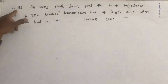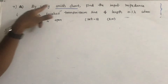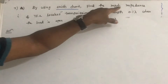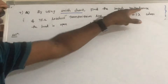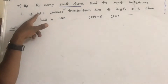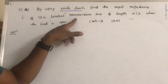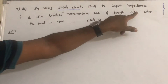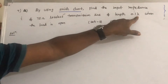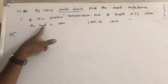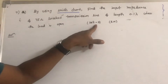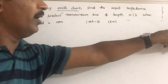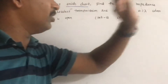Question 7a: by using the Smith chart, find the input impedance of a 75 ohm lossless transmission line of length 0.1 lambda when the load is open. This question is given in September, 8 marks, April-May 2016.